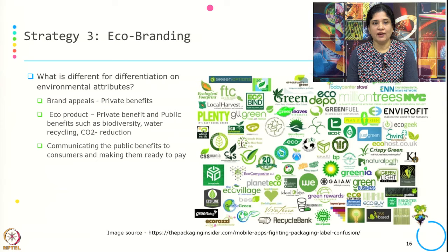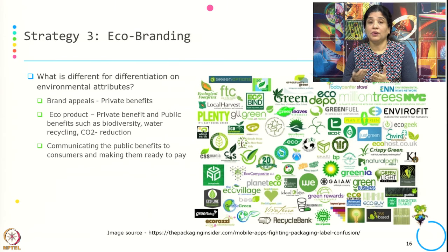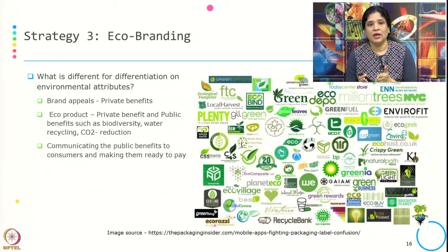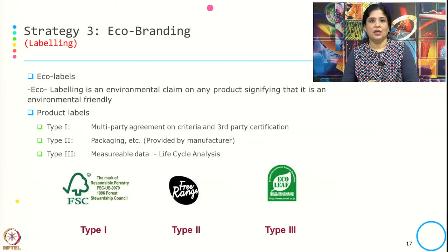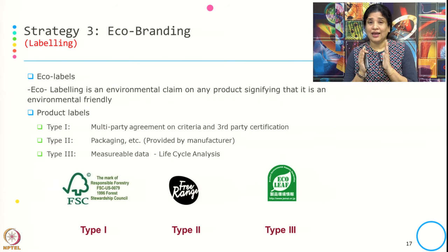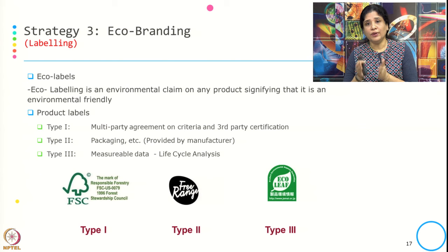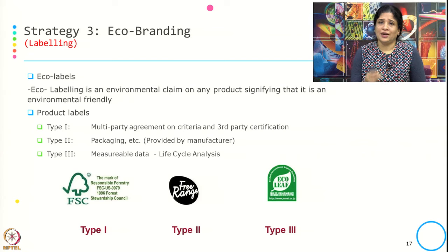If it is a private benefit, it is clear — you can communicate what benefit the consumer gets from the product or service. But communicating public benefit to the consumer and making them ready to pay because of that public benefit is the bigger challenge. Typically, eco branding happens through labeling, which we call eco labels — an environmental claim on a product signifying that it is environmentally friendly.